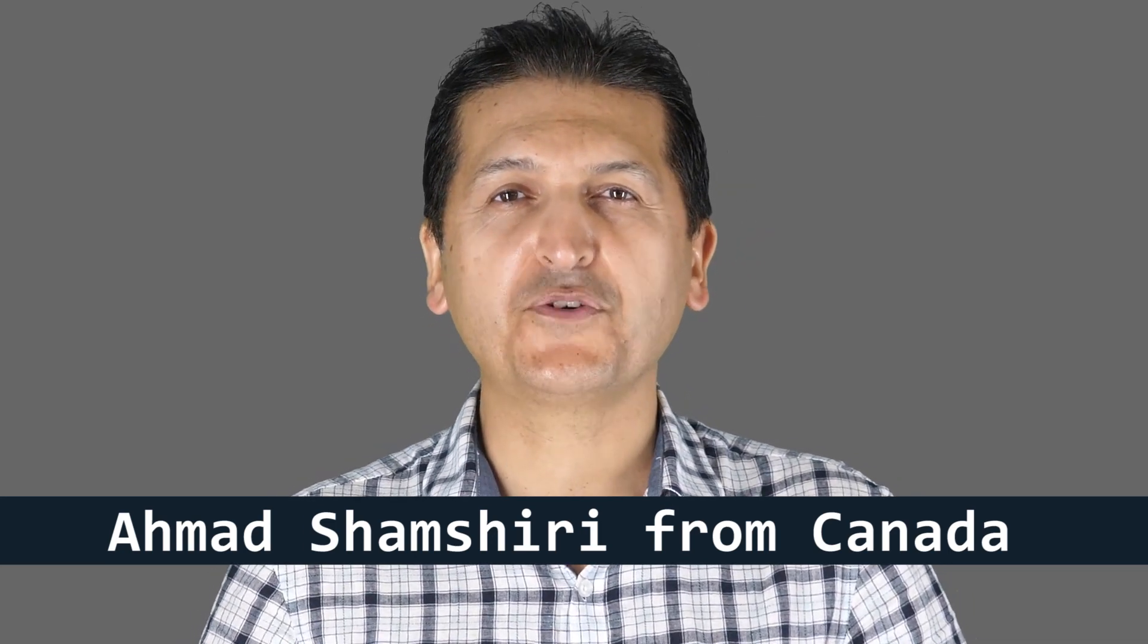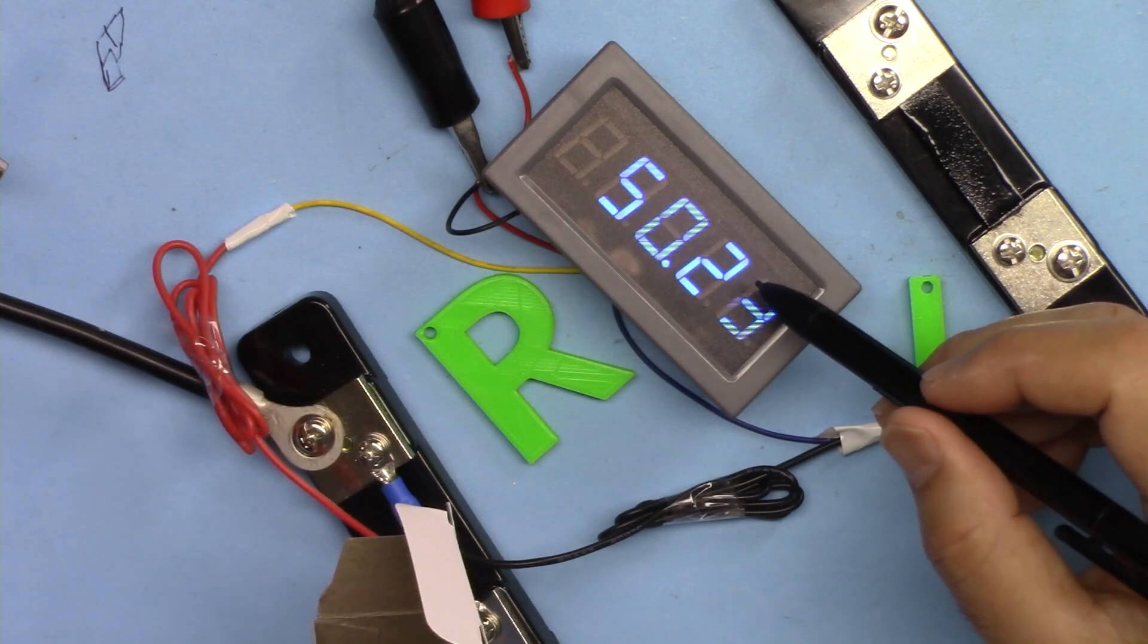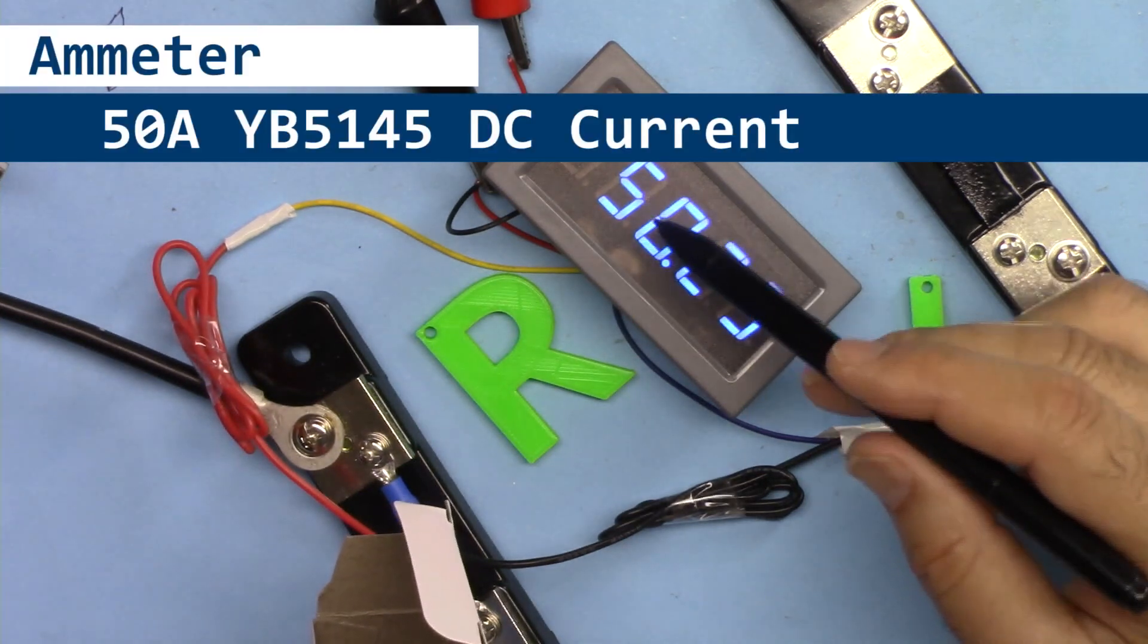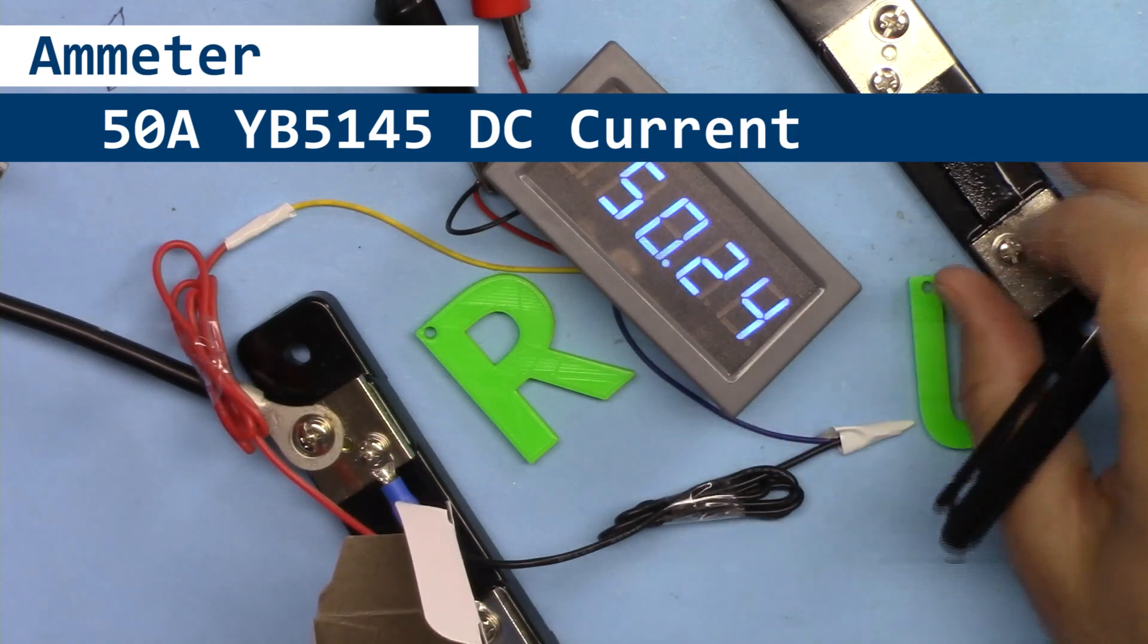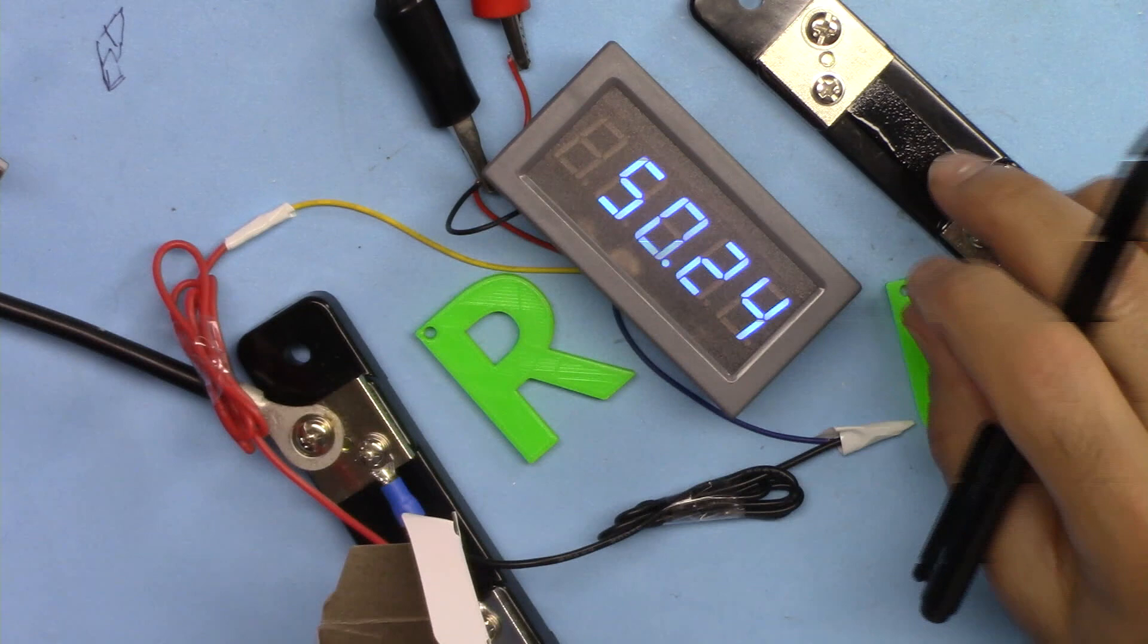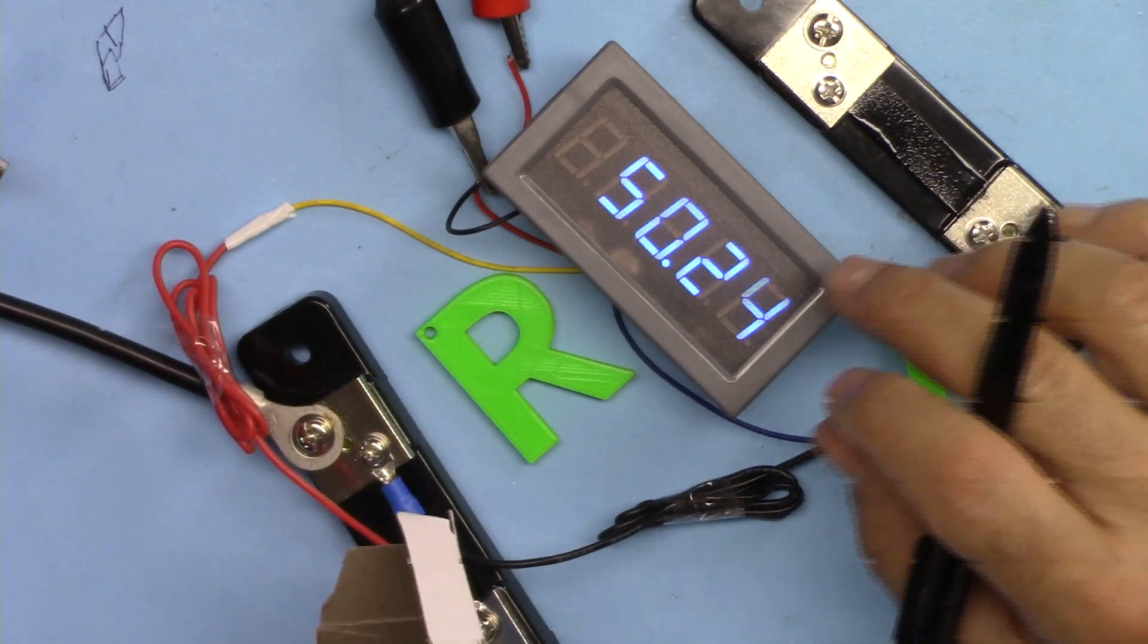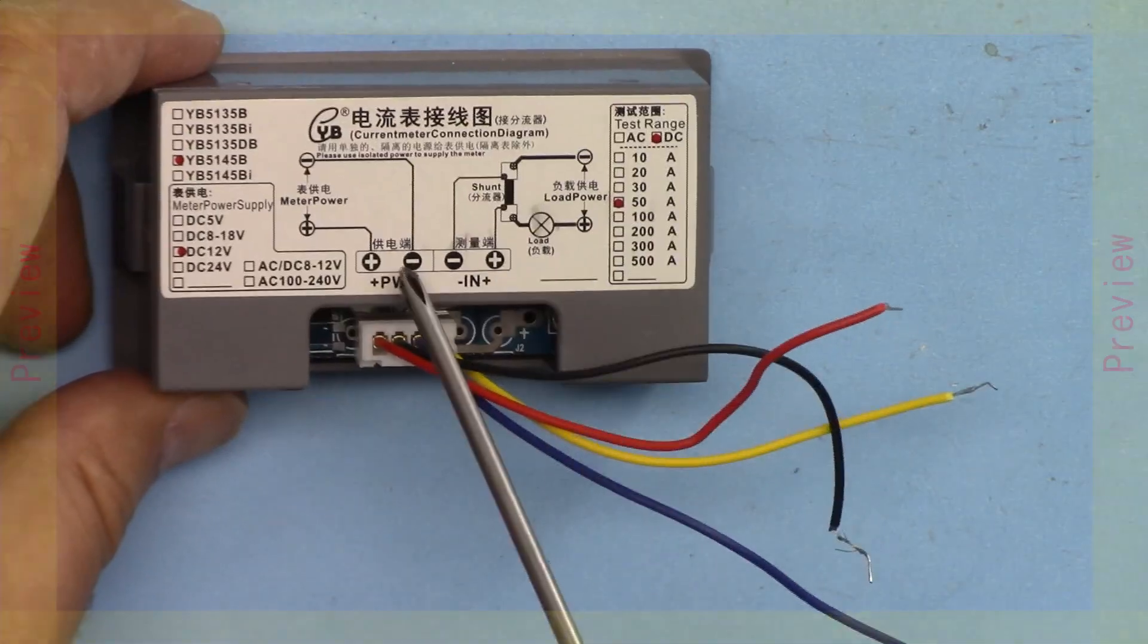Hi, welcome to a product review by Robojax. My name is Ahmad Shamshiri and in this review we're going to look at and test this 50 ampere five-digit LED display that can measure the current from a 50 ampere shunt resistor. This is from YB Electronics and the wiring is clearly explained.